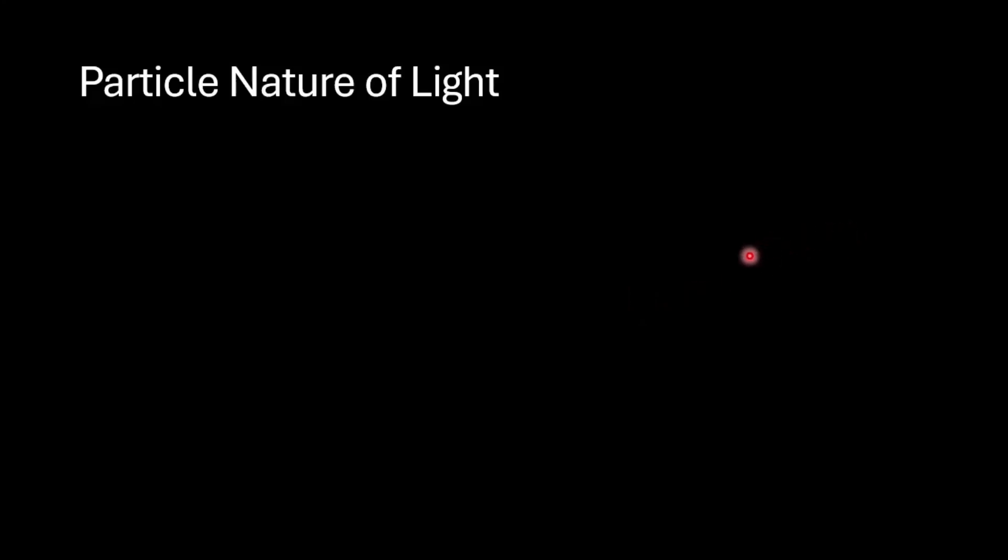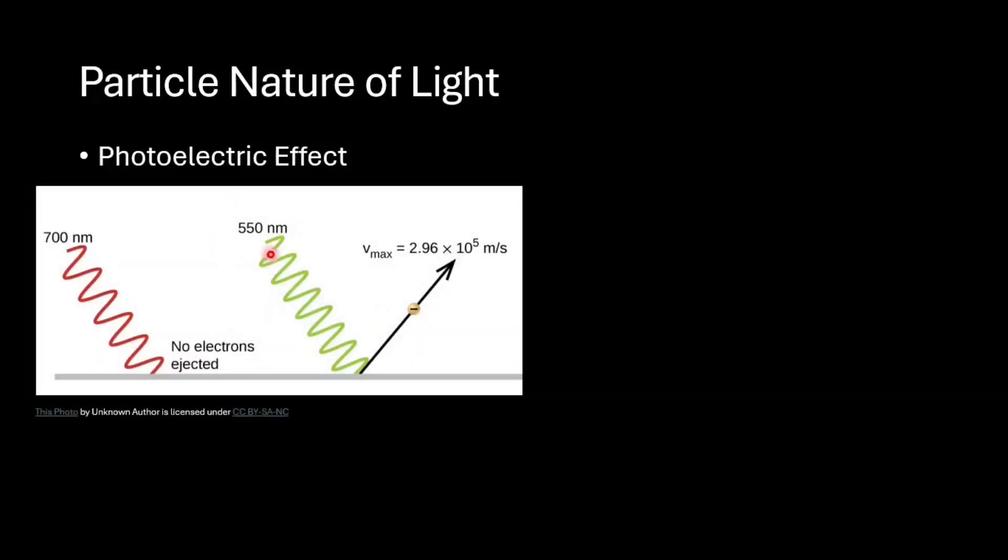The second unquestionable evidence that light behaves like a particle is the photoelectric effect. When light with a short enough wavelength shines on a metal surface, it causes the metal to release electrons right away. But if the light has a longer or insufficient wavelength, no electrons are released.